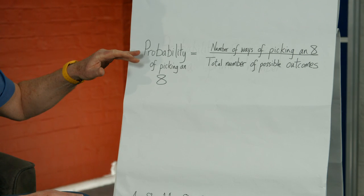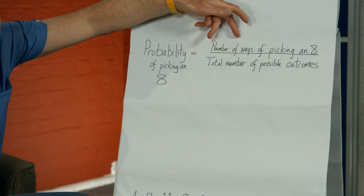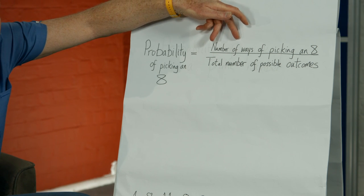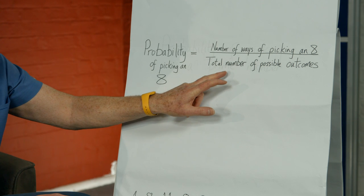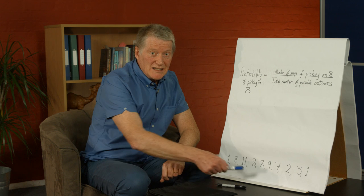So the probability of picking a number 8 is the number of ways of picking an 8 from that list over the total number of possible outcomes. So let's count those up.